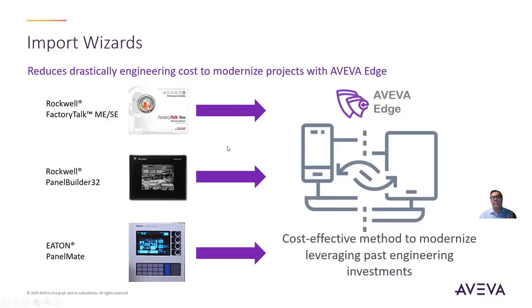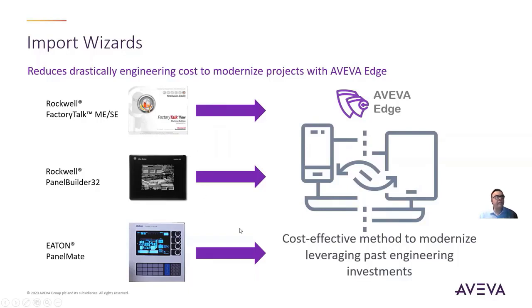For example, if you brought in a FactoryTalk View application, it would look and feel like that. But then over time, you can enhance that and not put too much stress on the operations staff or the maintenance staff, and improve and take advantage of the features within Aviva Edge. During the import, you end up with a project that is truly an Aviva Edge project, with native objects from Aviva Edge and the ability to use those and enhance those way above and beyond the functionality of those other products.